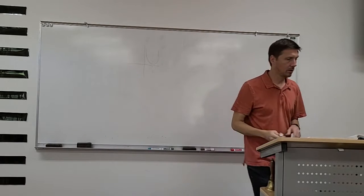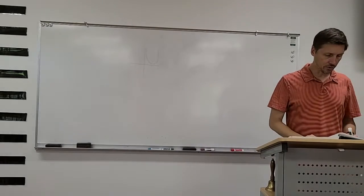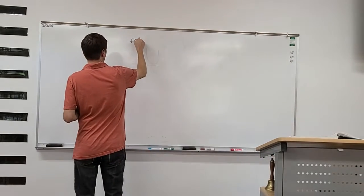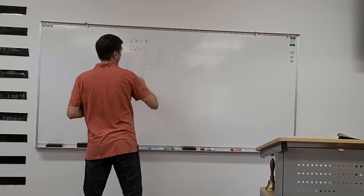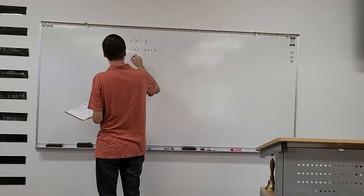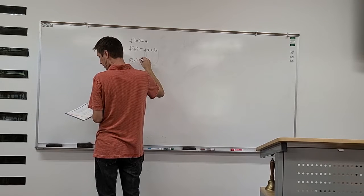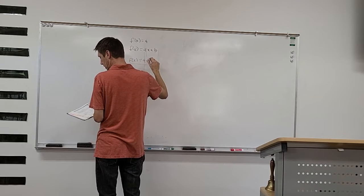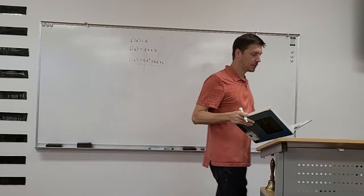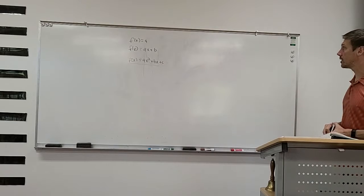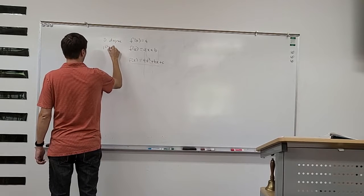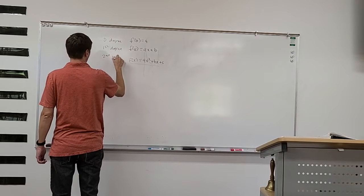Section 2.2, polynomial functions of higher degree, is the title of this section. As a reminder, we've looked at functions like constant functions, linear functions like ax plus b, and the last section was on quadratic polynomial functions. This is a polynomial of zero degree, this is first degree, and this is second degree.